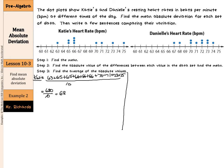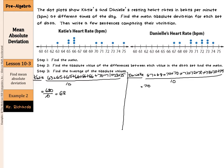Now let's calculate the mean for Danielle. Her values include two 73's and 74. Once again, there are 10 data values. These add up to 710, and when we divide that by 10, we get a mean of 71. So just looking at the means, Katie's mean is 68 and Danielle's mean is 71.